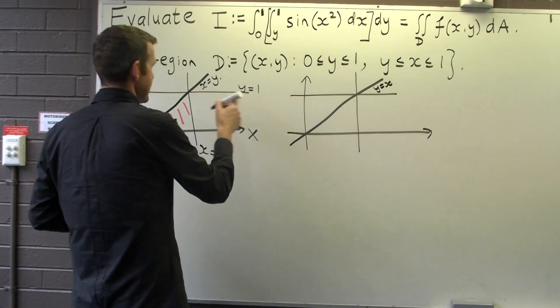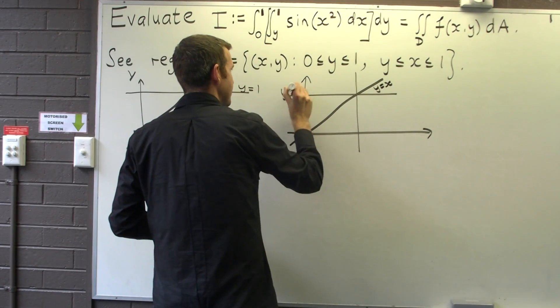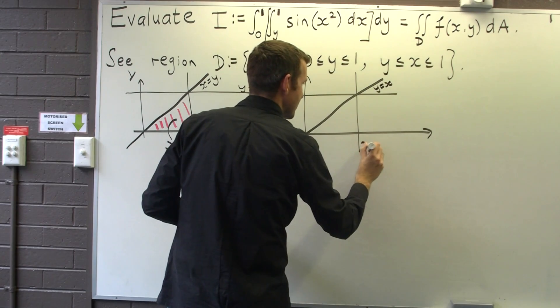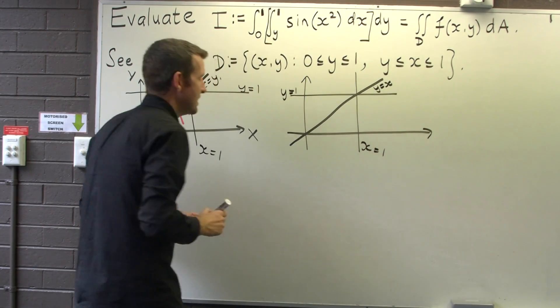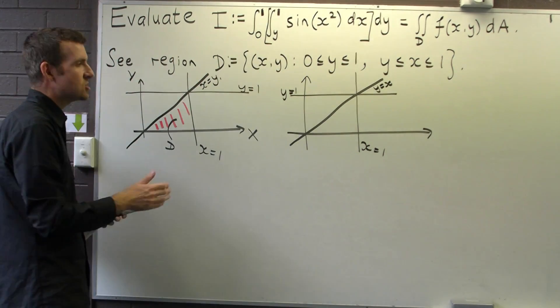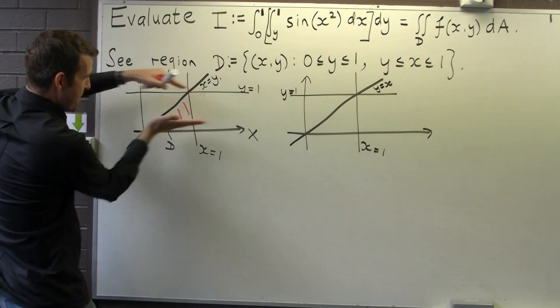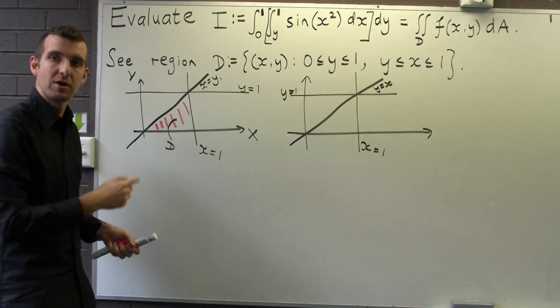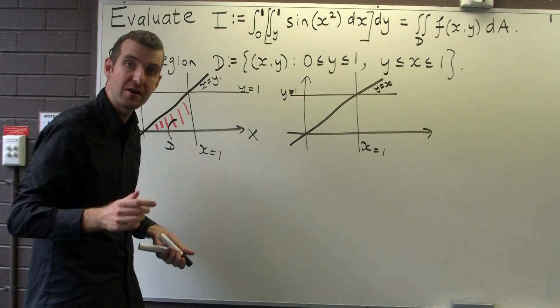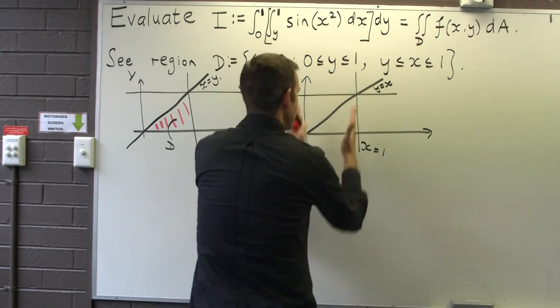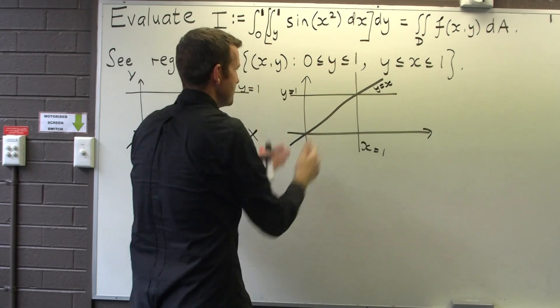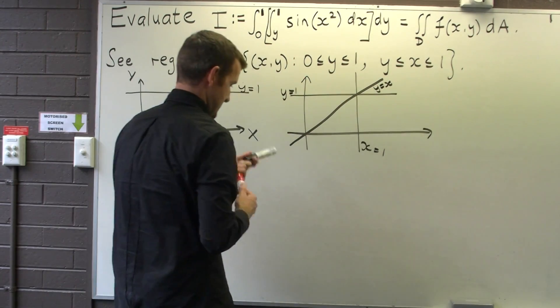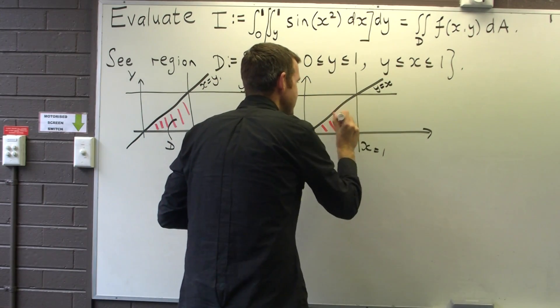Okay, so what I need now is I need two parallel lines. Here we've got two parallel lines going horizontally. In my new description, I'm going to use two parallel lines going vertically. To get this region, all I do is choose two parallel lines that are vertical.